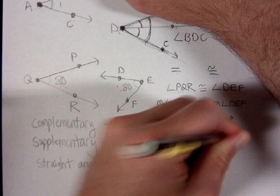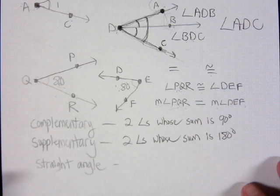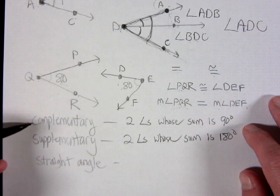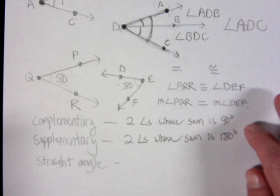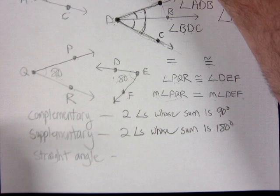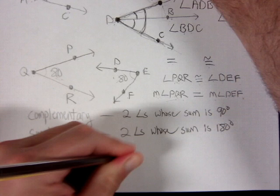Supplementary refers to two angles whose sum is 180 degrees. An easy way to remember: C comes before S in the alphabet, and 90 comes before 180 on the number line — both are in order. If they add up to 90 they're complementary; if they add up to 180 they are supplementary.